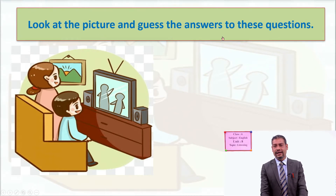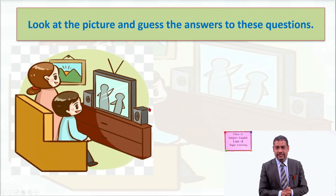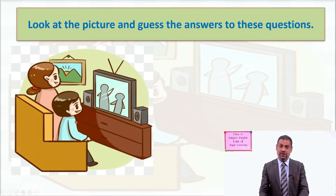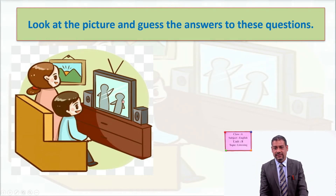Look at the picture and guess the answers to these questions. What do you see in the picture? You can see there is a mother and a son or daughter, and in front of them there is a television. They are watching something.